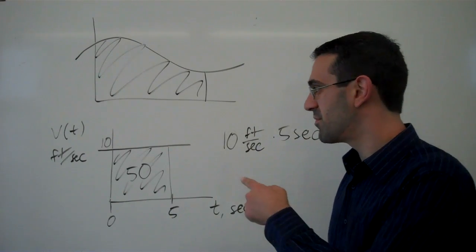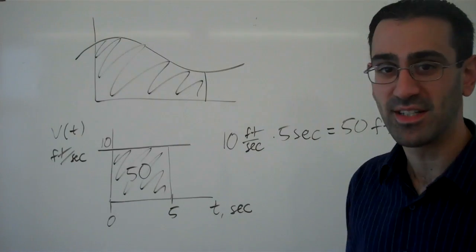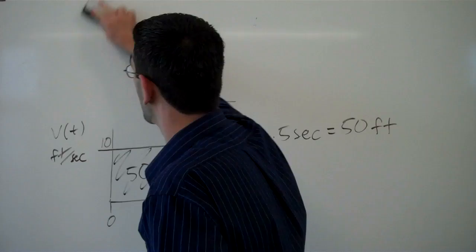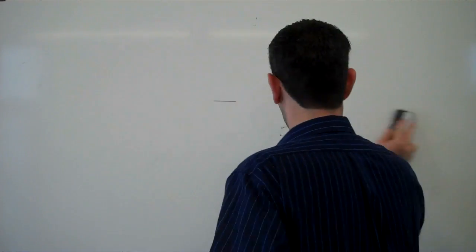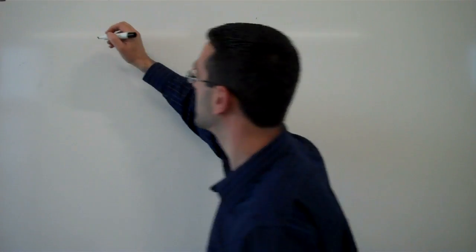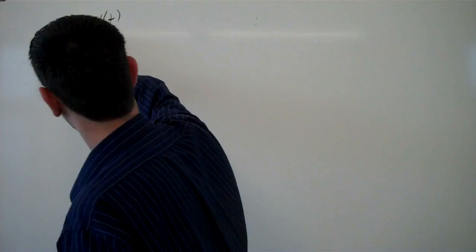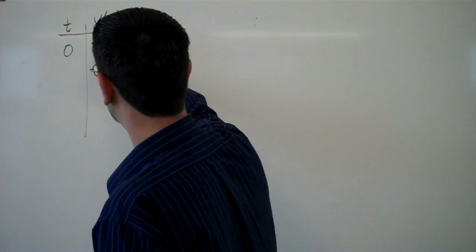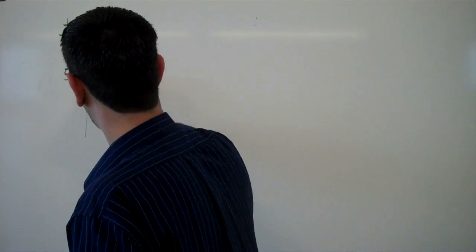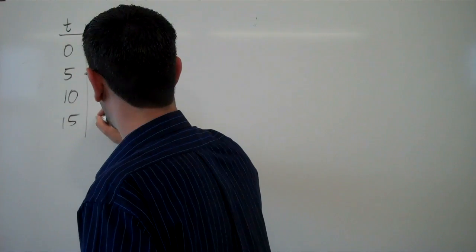So here the area under a velocity curve corresponds to a distance, and that gives us some idea of how these areas might be interesting for something other than just geometric reasons. So to look at a slightly more complex example now, suppose that we had a velocity function with a little bit more information. So we had, let's say, at time 0, our object started with a velocity of 10 feet per second. After 5 seconds the velocity was 20, after 10 seconds it was 15, after 15 seconds it was 25.